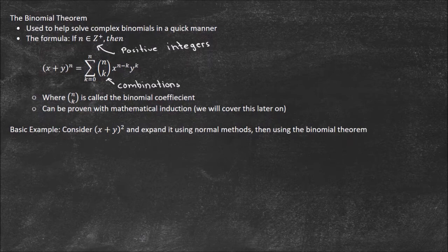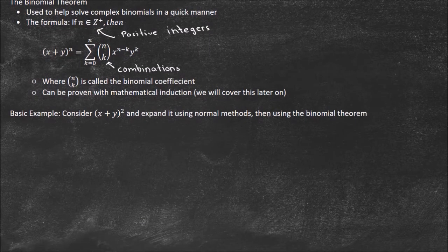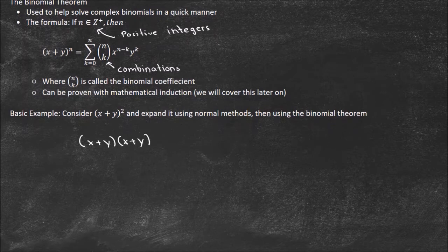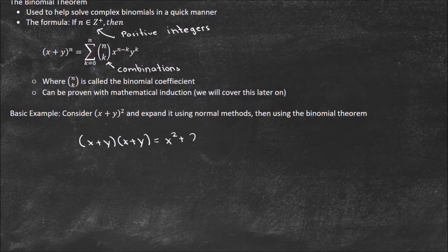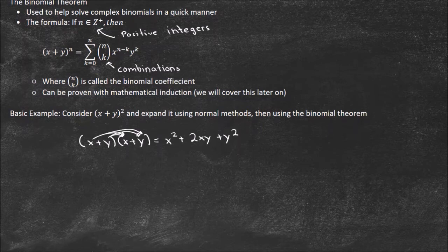Let's consider a basic example: (x + y)². This is easy enough to use normal methods, but I want to show you how to do it with the Binomial Theorem, and then we'll see how we get the same answer. So (x + y)² is just (x + y)(x + y), and by FOILing we get x² + 2xy + y² — that's how we expand it regularly.